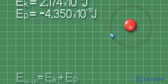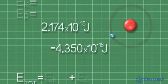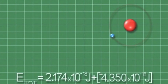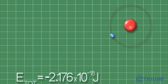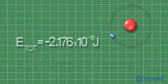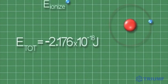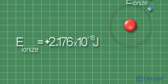Adding the kinetic and potential energies together gives us the total energy of the electron. A negative total energy means that the electron is bound to the proton. So to remove the electron from its proton requires adding this much ionization energy.